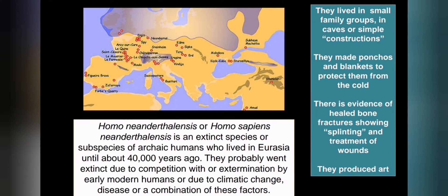Neanderthals were quite smart. They lived in small family groups, mostly in caves but sometimes in simple constructions. They made ponchos and blankets to protect themselves from the cold using the skins of animals they killed. There's also evidence that they were able to splint broken bones - some fossils show scar tissue where a bone healed straight, indicating it had been splinted. They were also able to control fire - making it, keeping it a certain size, and putting it out - and they produced art.